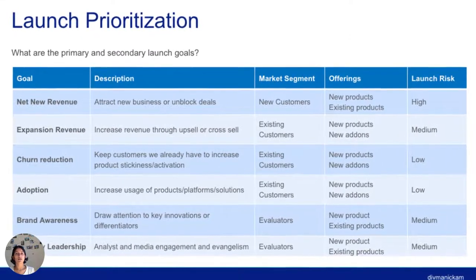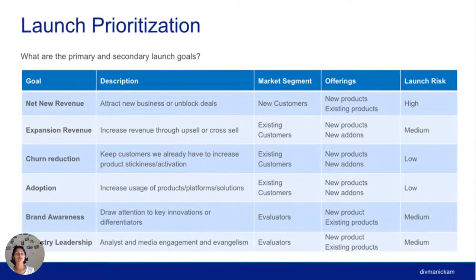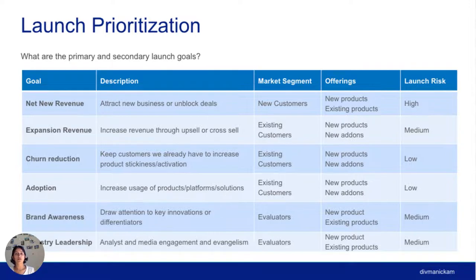Another piece of launch prioritization is defining your primary and secondary launch goals: net new revenue, expansion revenue, churn reduction, adoption, awareness, and industry leadership. These apply to different market segments, and your launch risk will vary from low to high. As a startup, you don't have much to work with, so make sure you're prioritizing in the right way. If you have too many priorities and projects, it will be very difficult to focus and have a successful launch.